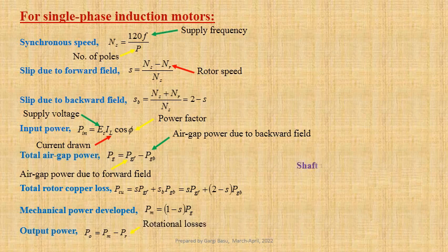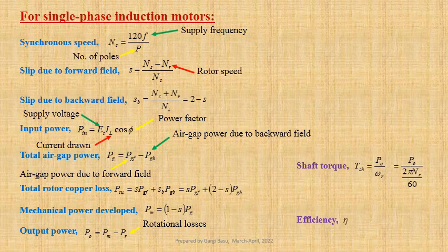Shaft torque Tsh equals to Po divided by omega r, where omega r is the rotor speed in radian per second, or Tsh equals to Po divided by 2 pi Nr by 60. Efficiency of the motor eta equals to Po divided by Pin.